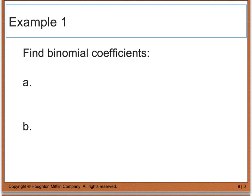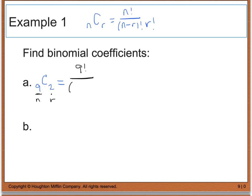For example 1, we are going to find the binomial coefficients. In part A, it says 9C2. If you remember back to our definition, nCr is equal to n factorial divided by the quantity of n minus r factorial times r factorial. In this case, 9 is my n value and 2 is my r value. So I have 9 factorial divided by 9 minus 2 factorial times 2 factorial. When we simplify this, it's 9 factorial divided by 7 factorial times 2 factorial, and this gives me 36.